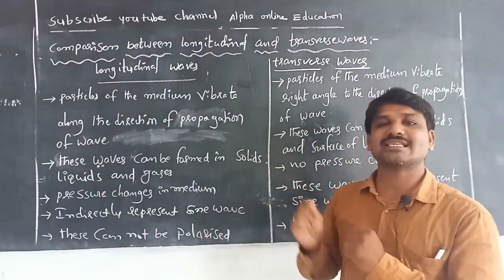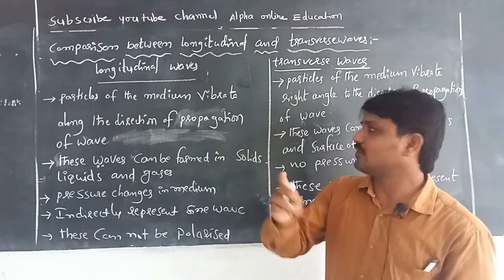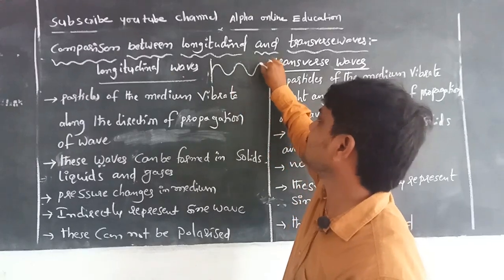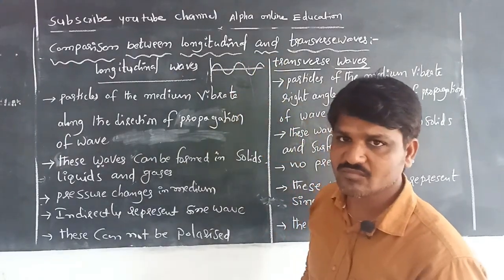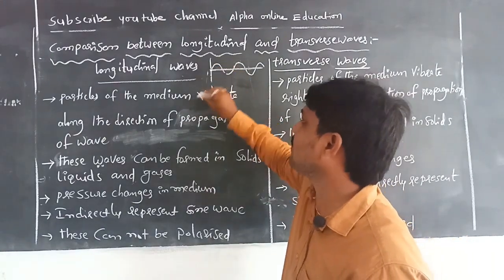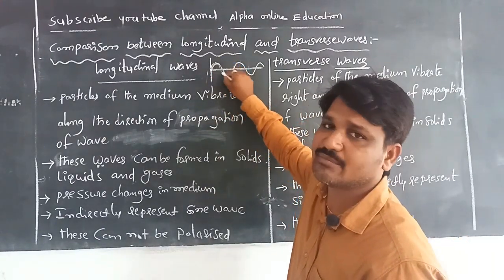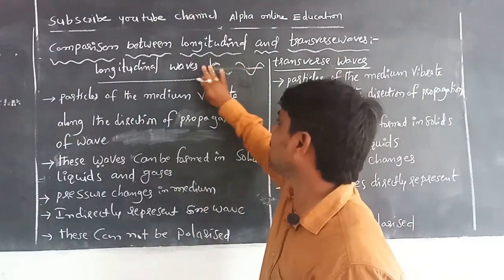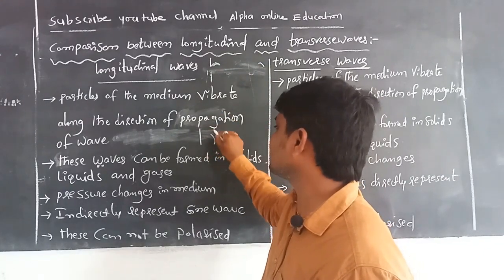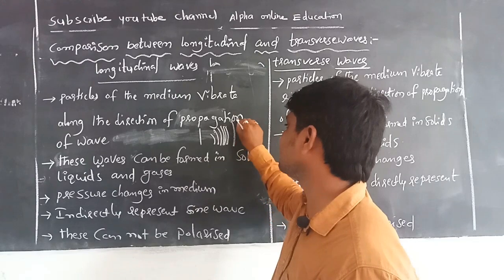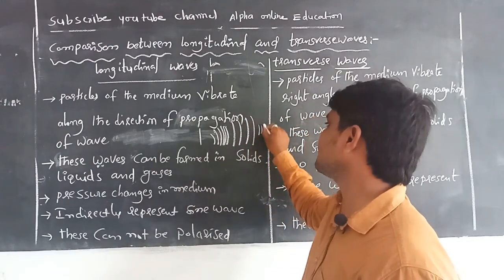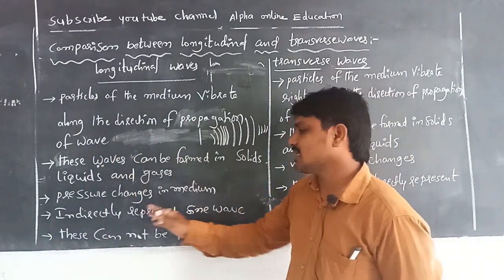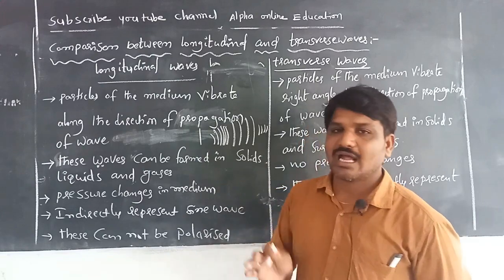Longitudinal waves indirectly represent the sine wave. A sine wave is one where the wave starts at a zero point, goes through a maximum, and repeats. Here, because compressions and rarefactions are formed alternately, we can say that longitudinal waves indirectly represent the sine wave.